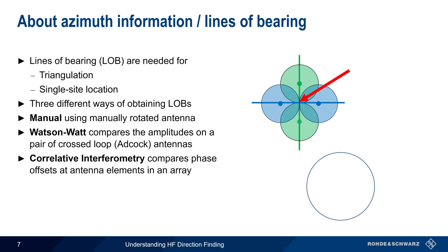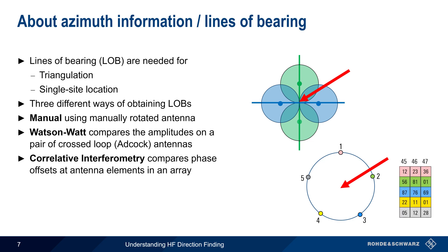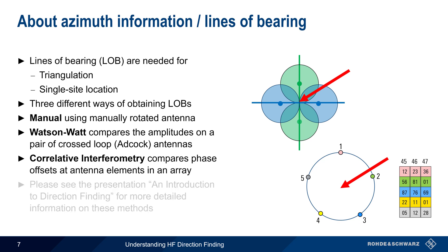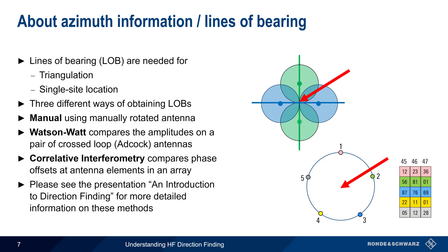In correlative interferometry, a circular array of antenna elements receives the signal of interest, and the phase offsets seen at each element are used to estimate the angle of arrival. We won't go into more detail on these methodologies in this presentation, so please see the separate presentation An Introduction to Direction Finding if you'd like more information about these different methods of obtaining azimuth information.